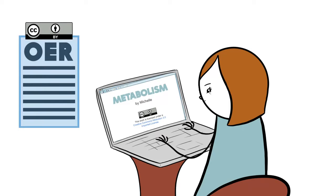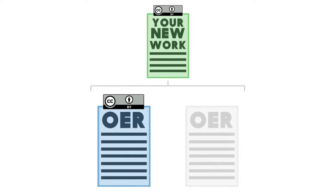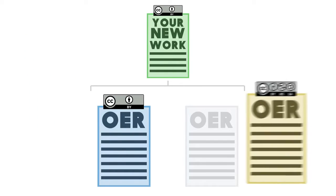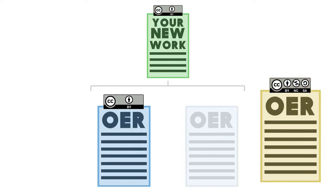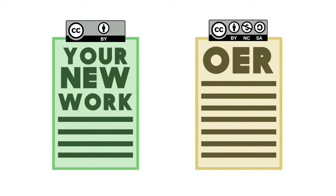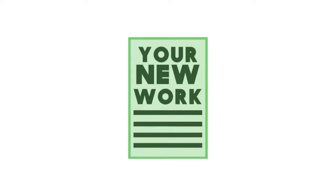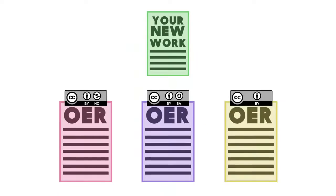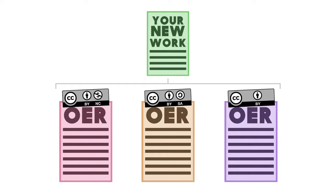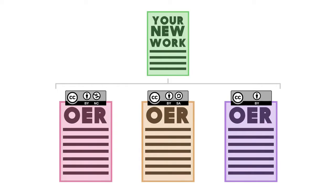Michelle used the BY license, which made licensing her new work easy. But not all licenses play well with others. Let's consider some situations where the licenses being combined are more restrictive. Suppose you are developing a work and you want to use some other CC licensed works within yours. If you adapt or derive works offered under Creative Commons licenses, you must not only follow the terms of the licenses involved, but also choose a license for your work that is compatible with the licenses of the works you are using.